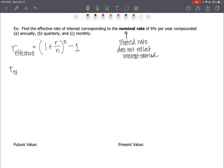So, our effective rate r sub eff is equal to 1 plus 0.06 for your nominal rate over 1 for annually. So, annually is once a year raised to the 1 power because that's once a year minus 1. So, 1 plus 0.06 minus 1 is 1.06 minus 1 which is 0.06 which is 6%. So, that's annually.